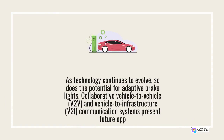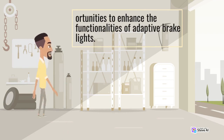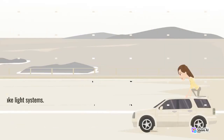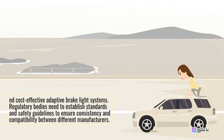As technology continues to evolve, so does the potential for adaptive brake lights. Collaborative vehicle-to-vehicle and vehicle-to-infrastructure communication systems present future opportunities to enhance the functionalities of adaptive brake lights. However, widespread adoption will require both manufacturing support and regulatory changes. The automotive industry must invest in the research and development of reliable and cost-effective adaptive brake light systems. Regulatory bodies need to establish standards and safety guidelines to ensure consistency and compatibility between different manufacturers.